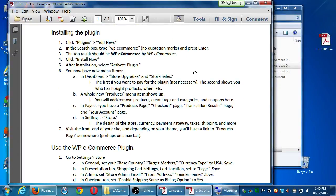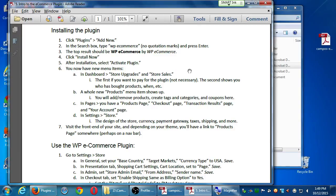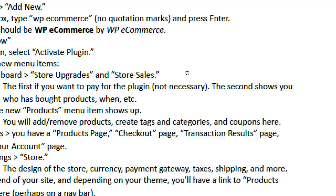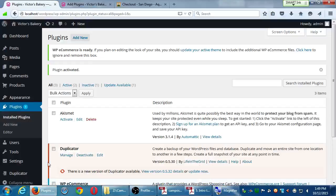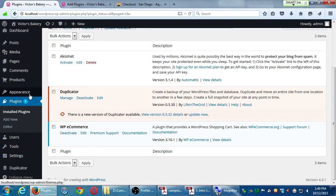We've got our plugin installed. Now let's look at what features we got out of the box. The handout gives us an overview — we now have new menu items. The great thing about plugins is they give us new features. The bad thing is there's no consensus on how to deliver those features. Some developers add their own unique menu item, and some put features in an existing one. On our site we have a brand new link called Products.